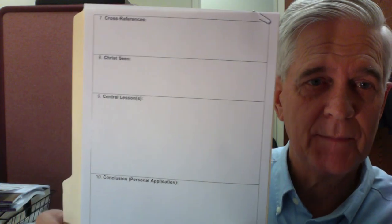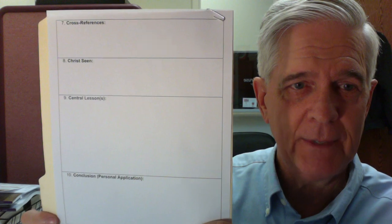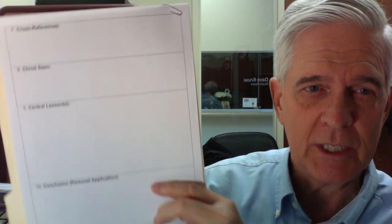And then on that back side, you put down your cross references, where Christ is seen, then you have your central lessons, and then you wrap it up with your conclusion down at the bottom. So that's basically what a chapter summary form looks like.